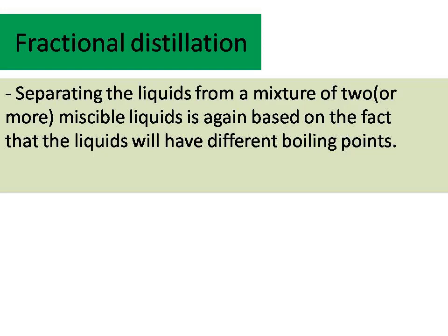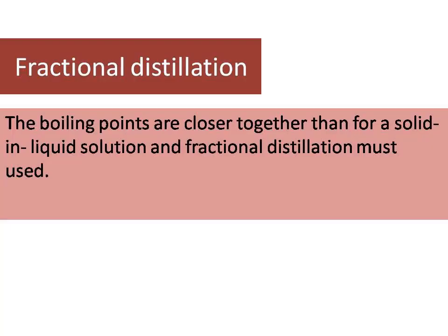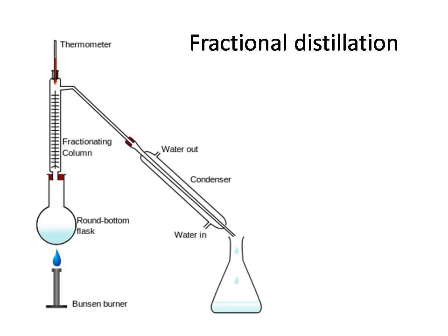Now we want to learn how to separate liquids dissolved in each other using fractional distillation. This technique is used to separate liquids from a mixture of miscible liquids, especially when their boiling points are close to each other. For example, fractional distillation can separate a mixture of ethanol and water — ethanol boils at 78°C whereas water boils at 100°C. The key difference from simple distillation is the presence of a fractionating column.